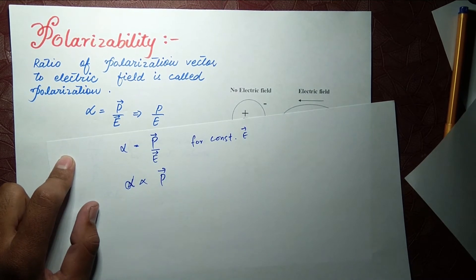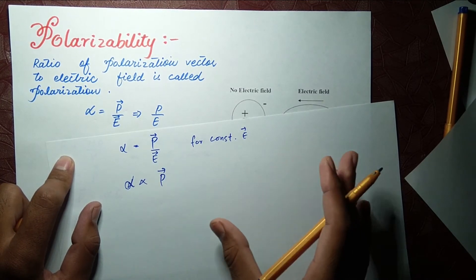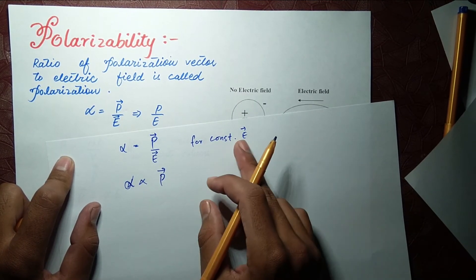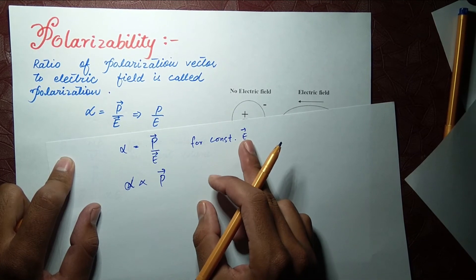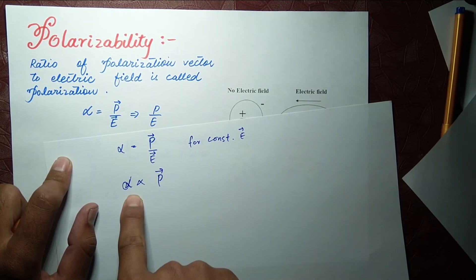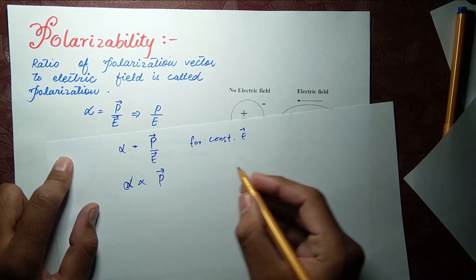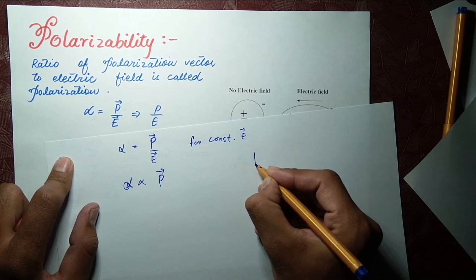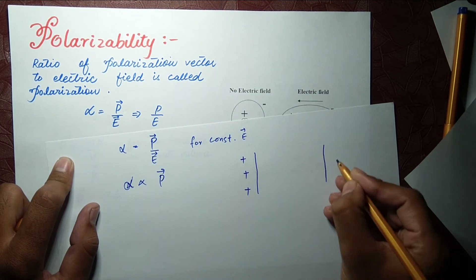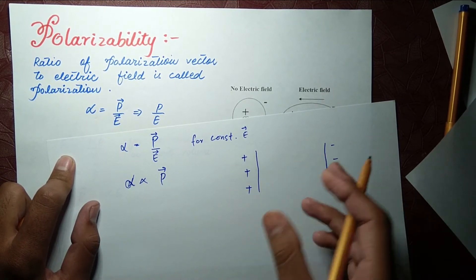What does this mean? It means that polarizability is a measure of polarization — how much the dipole will be formed and how strong the dipole will be under a constant electric field. Polarizability tells us: with this electric field, how much polarization will occur? Let's look at an example — we have a constant electric field E and we've placed a molecule or atom in it.